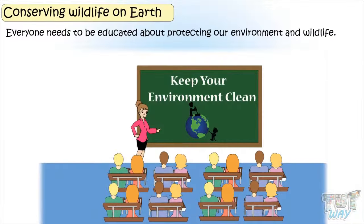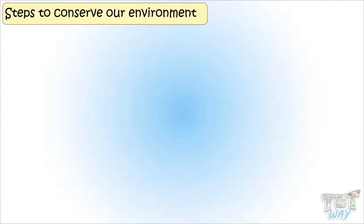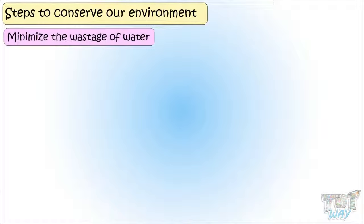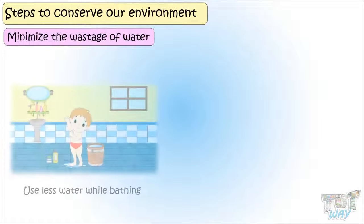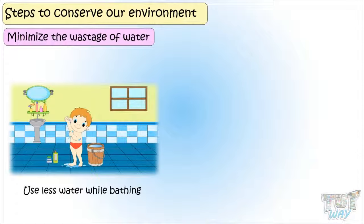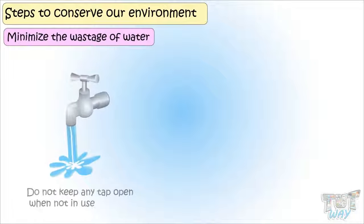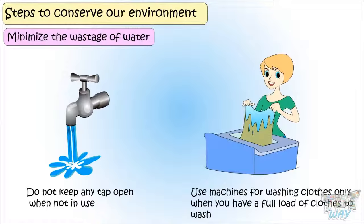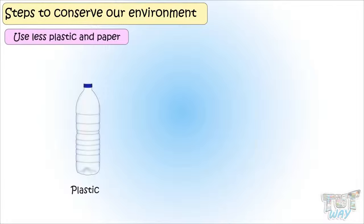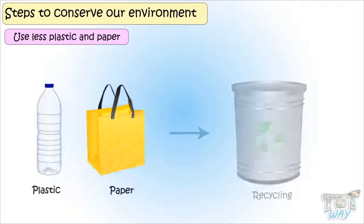Everyone needs to be educated about protecting our environment and wildlife. First, minimize the wastage of water — use less water while bathing, water your lawn only when required, and do not keep any tap open when not in use. Use washing machines only when you have a full load. Use as little plastic and paper as possible, and give away plastic and paper material for recycling.